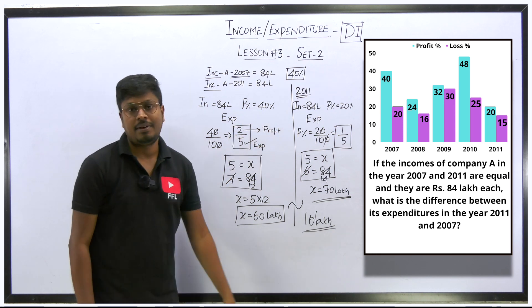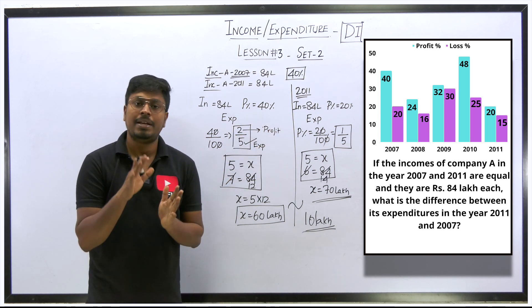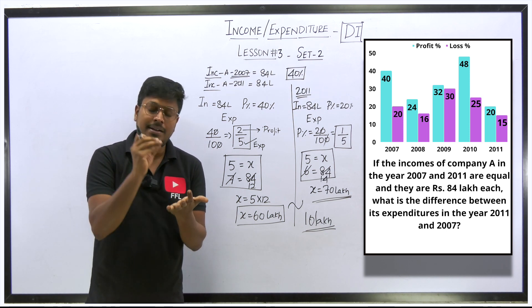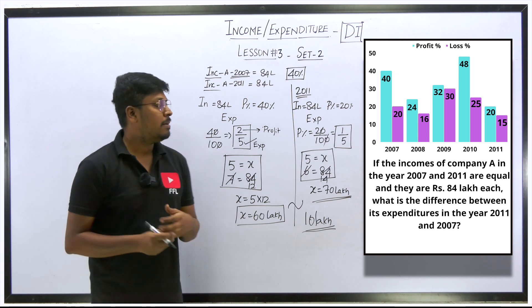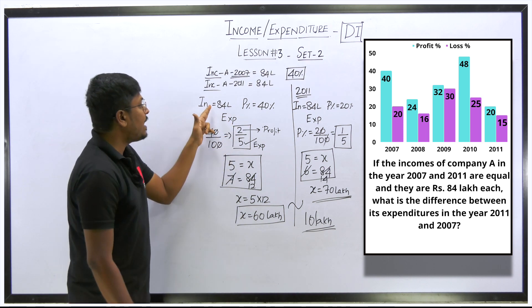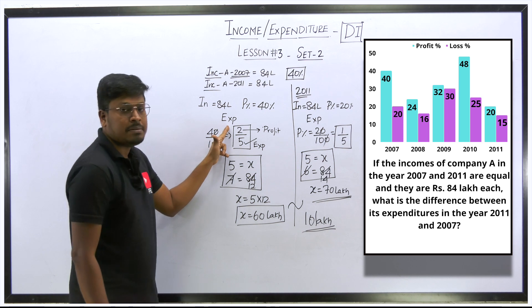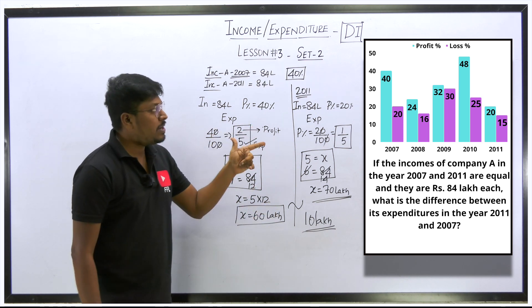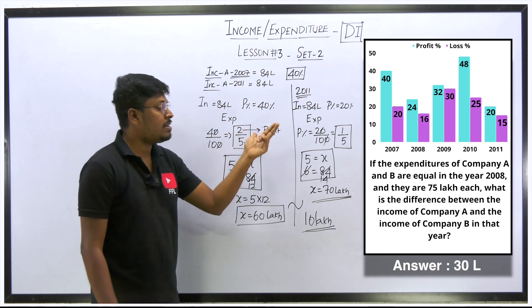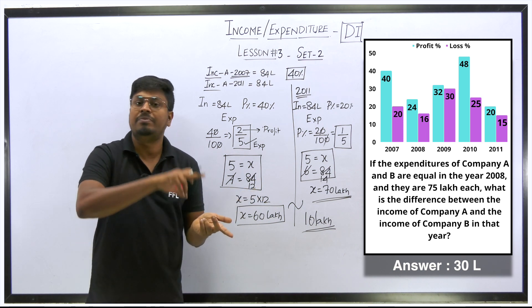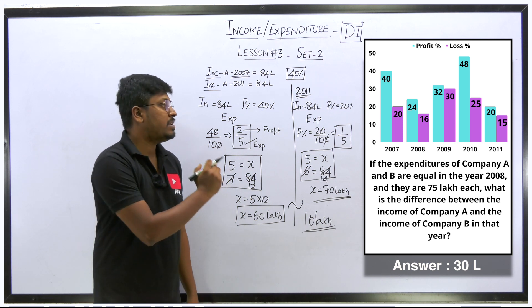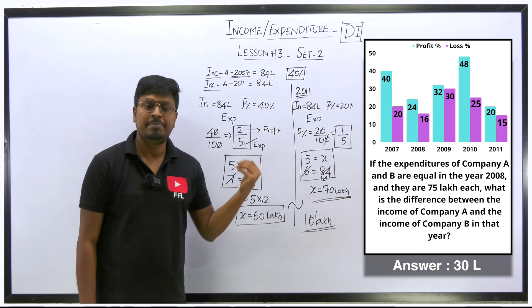All these concepts were covered in lesson one, where we learned the introduction to income expenditure and solved three questions including one by traditional method and one by shortcut — how to find expenditure from income and profit percentage, or income from expenditure and profit percentage. As an extra practice question, expenditure value will be given and you need to find income using the same shortcut.